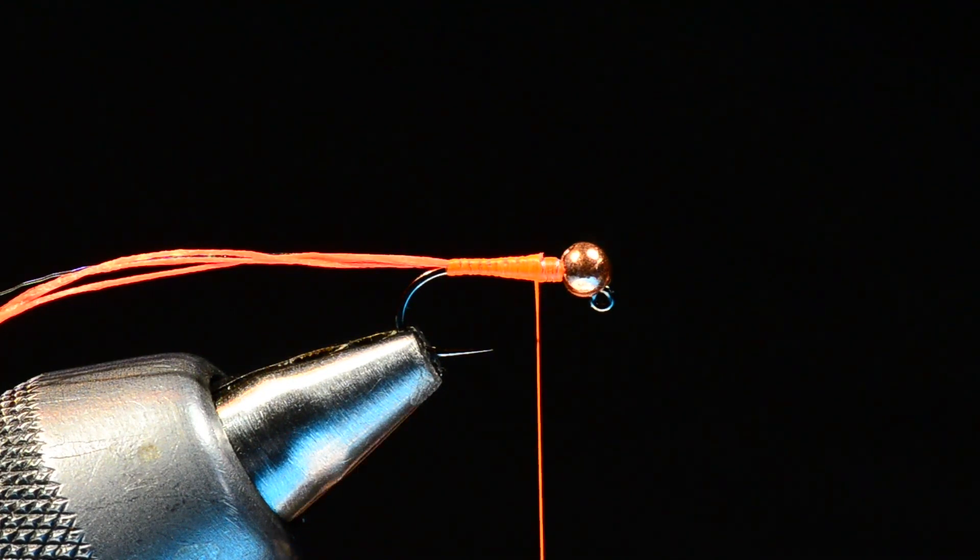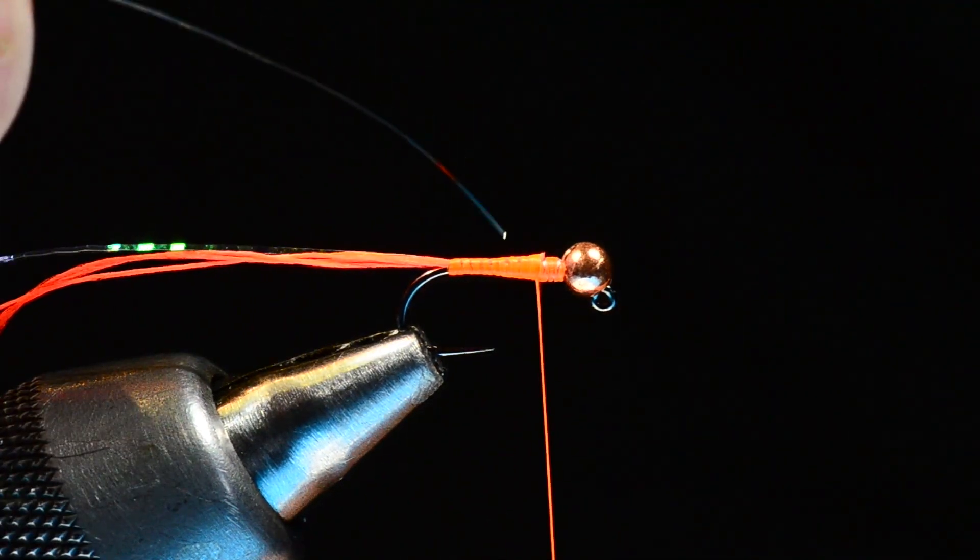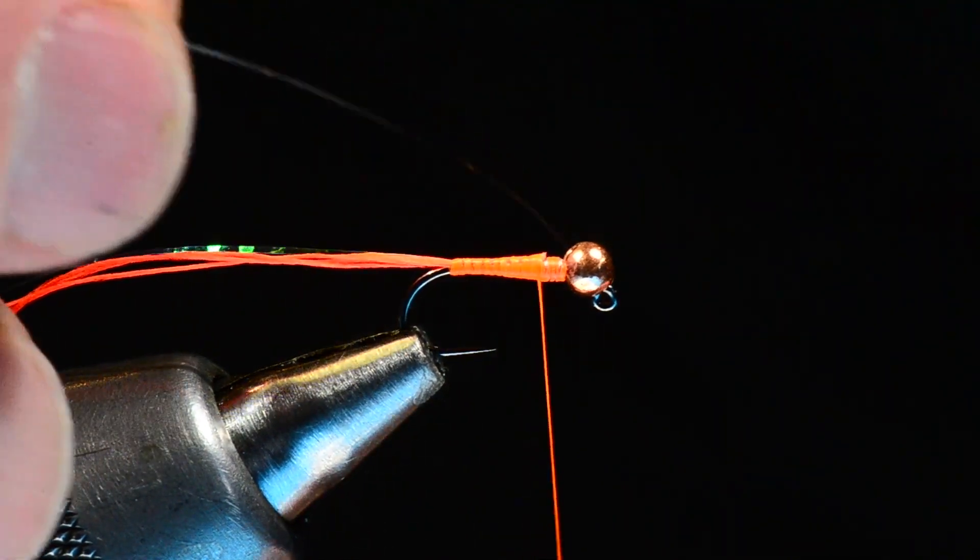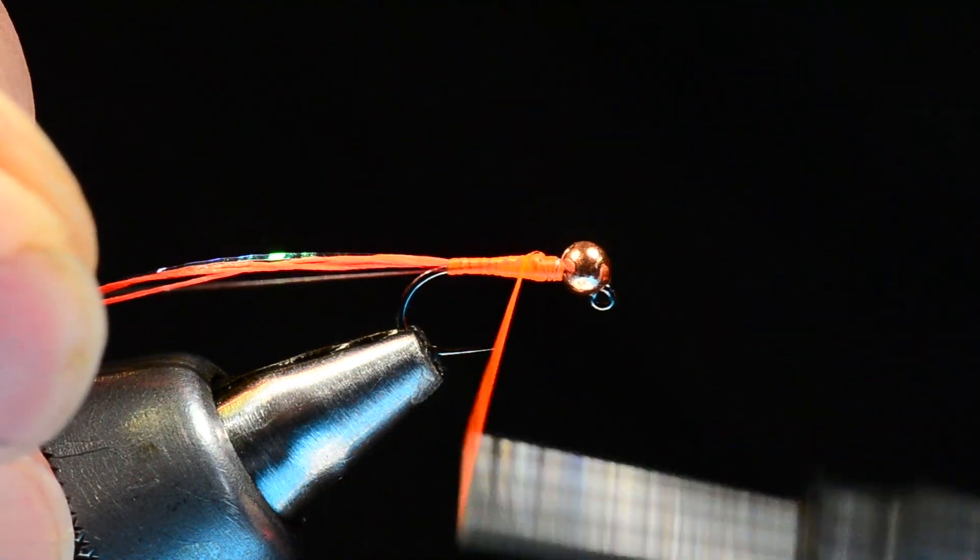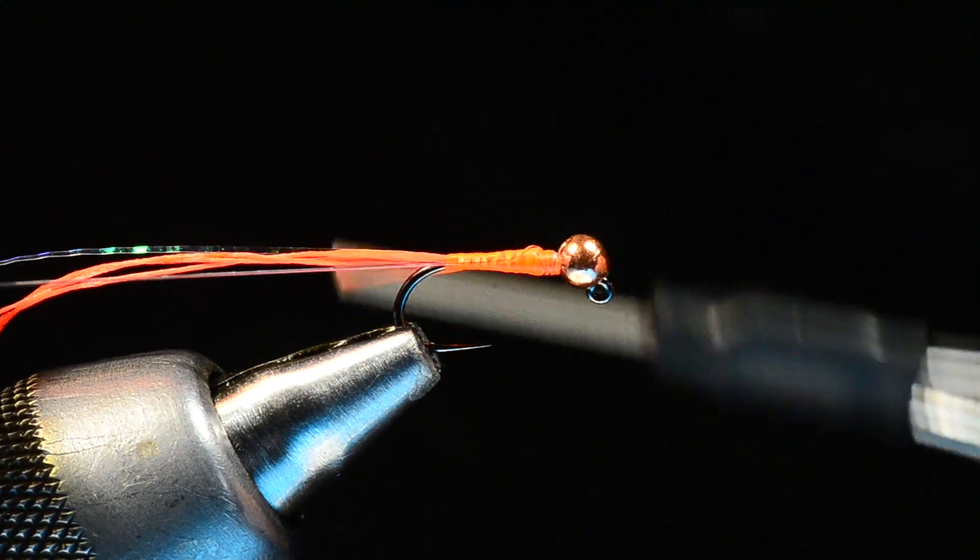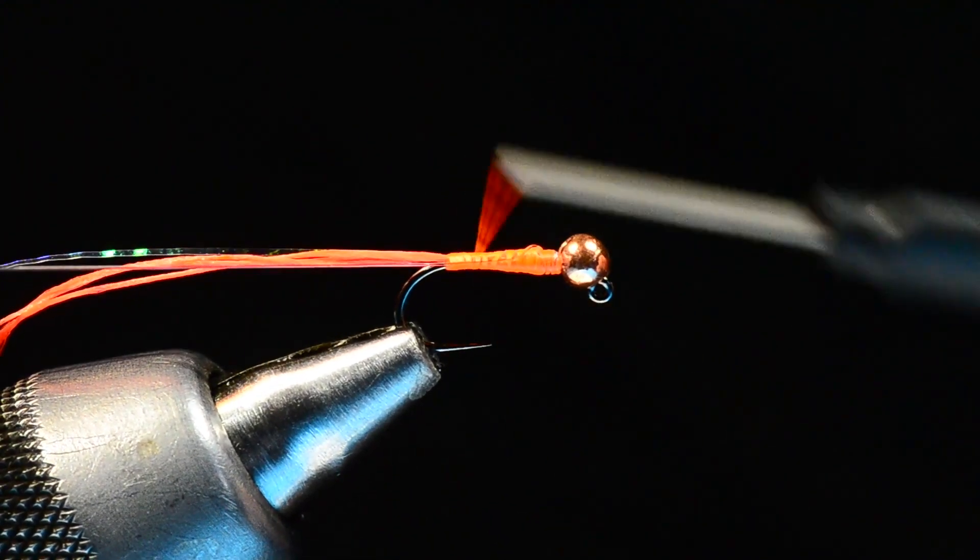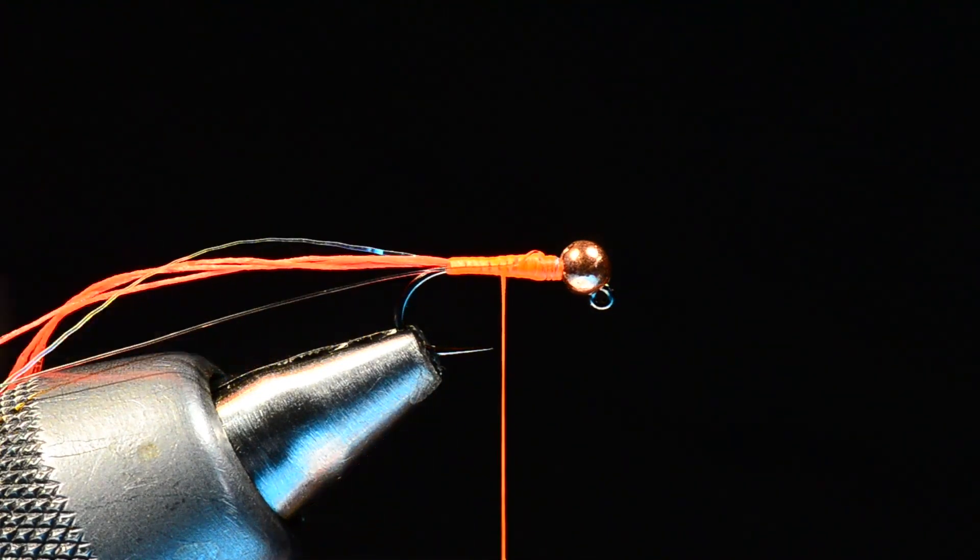Then I'm going to come in with a piece of 5x tippet material for the rib. With the tippet material, this is going to be a counter rib. The idea of this is to strengthen that rib. I'm going to catch this and draw it to the far side of the hook and bind it down in place keeping it along the far side. I've got both my flash and my rib tied in - flash is on the near side, rib is on the far side of the hook.